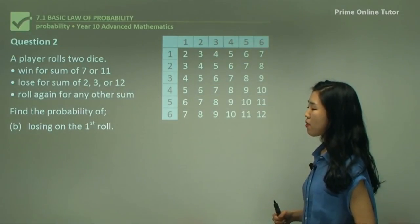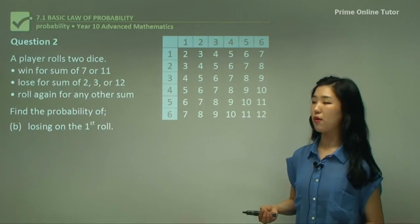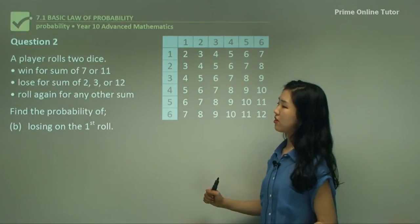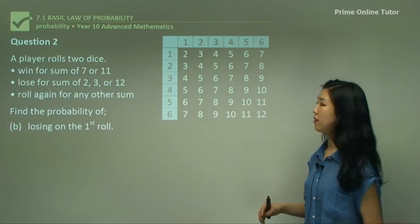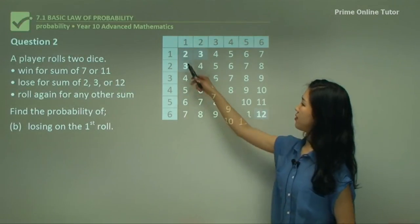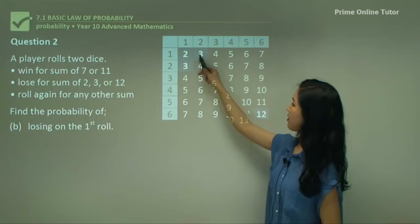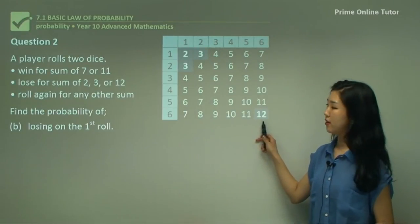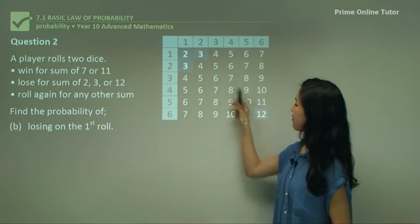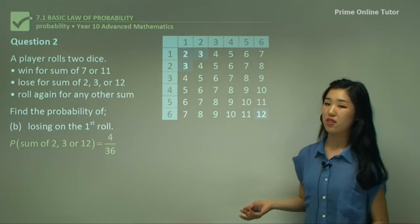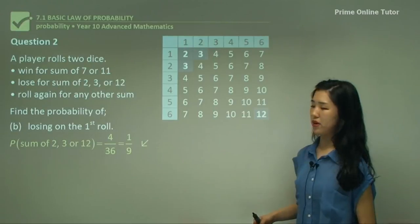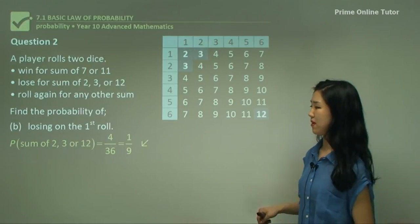Now B — what's the probability of losing on the first roll? If you want to lose you have to have a sum of 2, 3, or 12. So find the 2, 3, or 12 — there. So that's 2, that's 3, and that's 12. So I'm going to lose if I have these sums — 1, 2, 3, 4 outcomes. So 4 out of the 36. Simplify it to get 1 over 9. That's the probability of losing.